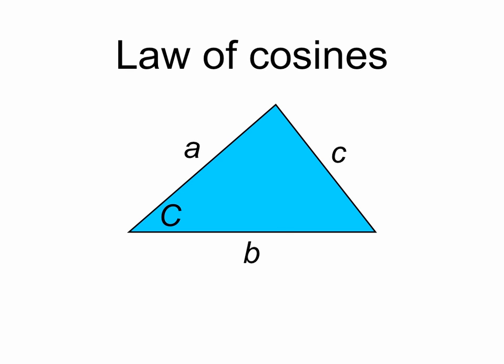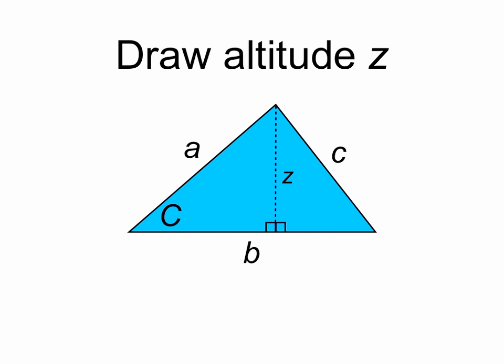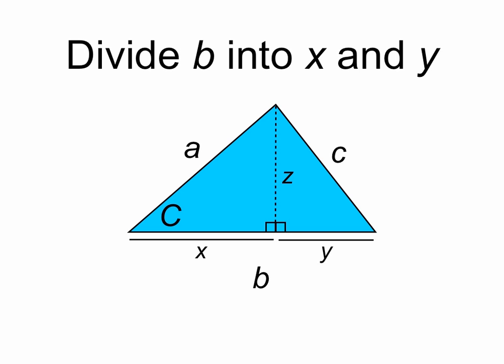We're going to derive the law of cosines. First we're going to draw an altitude z in this triangle to side b. And now we're going to divide the side b into lengths x and y going to that altitude.